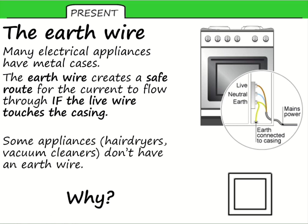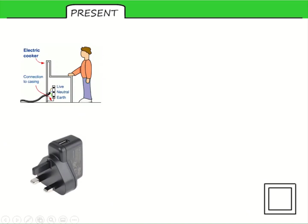Here's a question for you: some appliances don't have an earth wire. You might see a symbol like this — two squares, one inside the other — on an electrical device at home. That tells you it doesn't have an earth wire. Why might that be? Your phone chargers are usually the same — this plug has two pins at the bottom for the live and the neutral, but there is a plastic placeholder where there would normally be an earth pin.